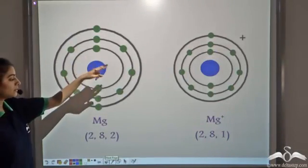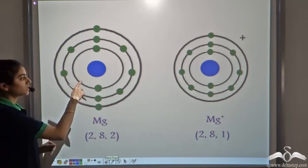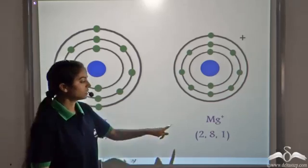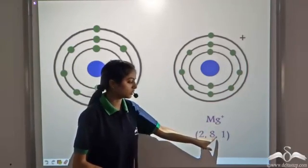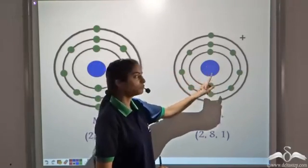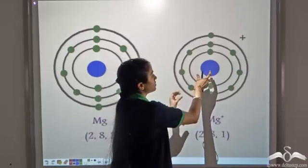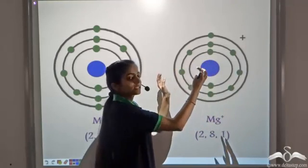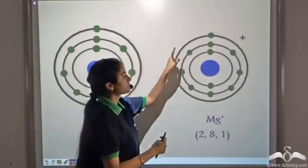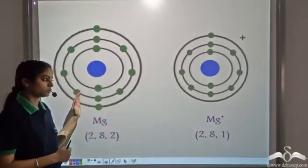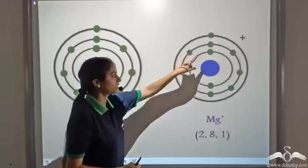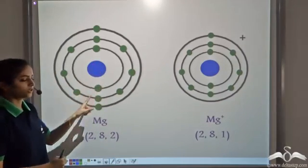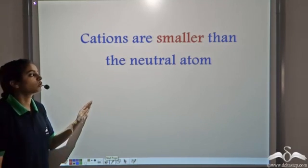In a neutral atom, take magnesium — it has electronic configuration 2, 8, 2. In a neutral atom, the number of protons equals the number of electrons. If we remove one electron from magnesium, we get a positively charged ion Mg⁺ with electronic configuration 2, 8, 1. Now the number of protons is one more than the number of electrons, so the nuclear charge exerted on the electrons increases. It exerts a greater pull on the shells, so the size of the cation decreases compared to the neutral atom. Cations are always smaller than the neutral atom.